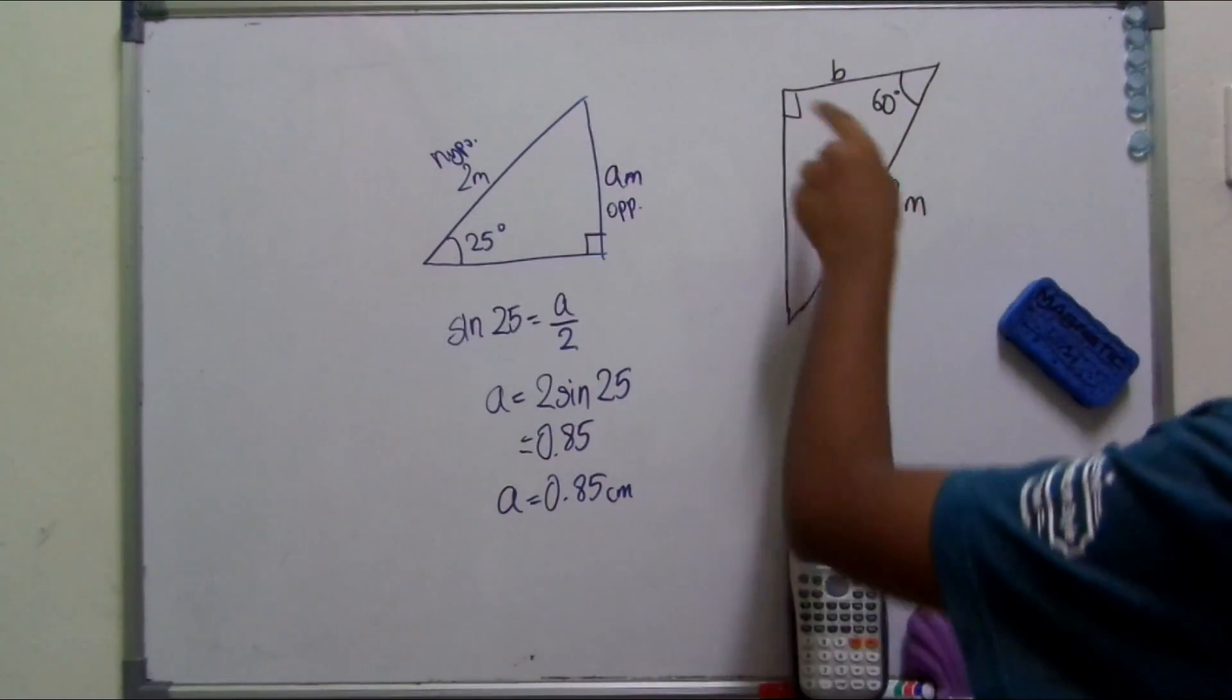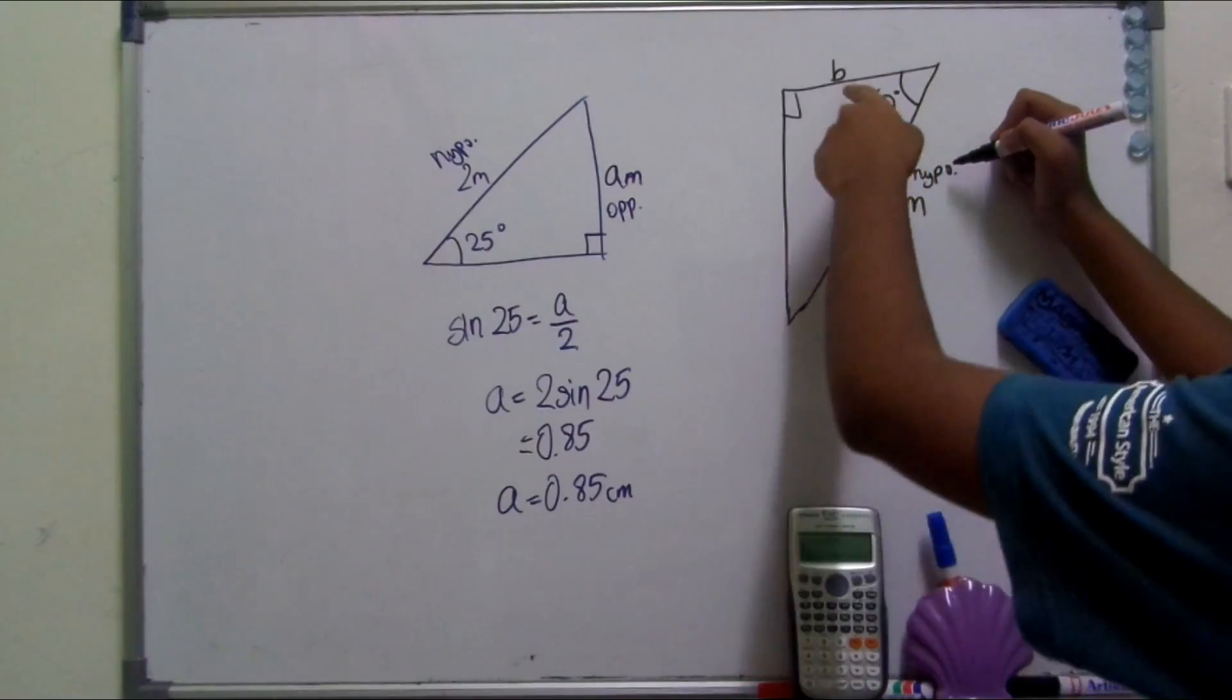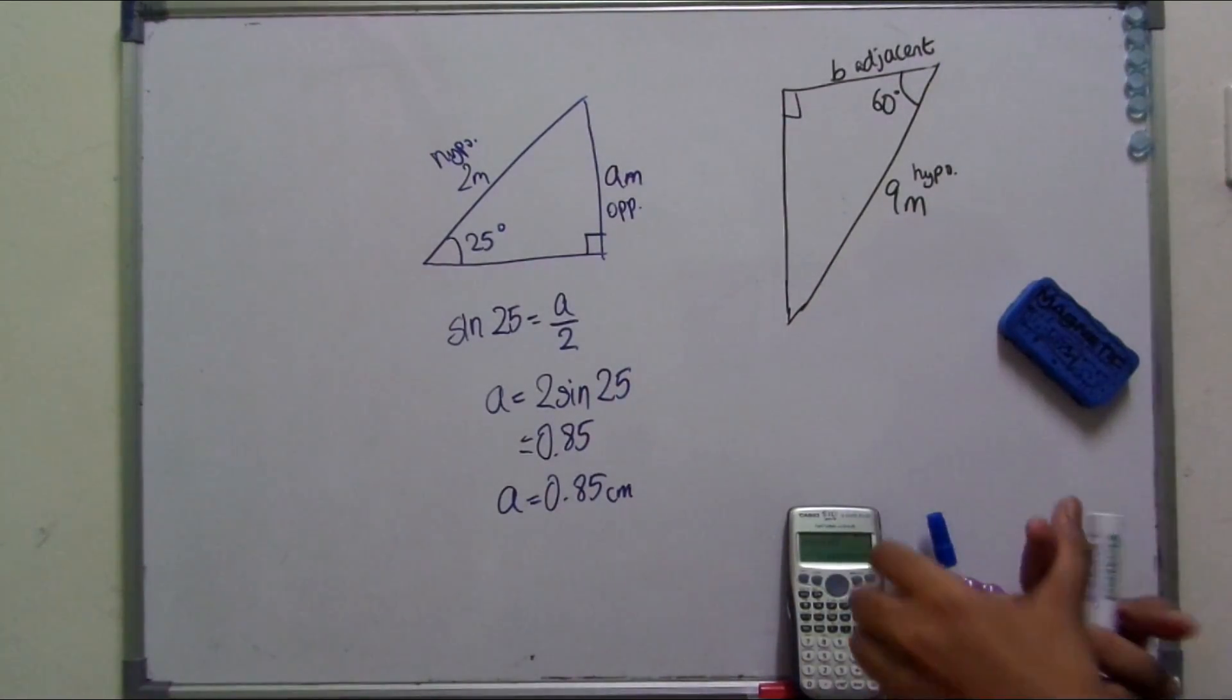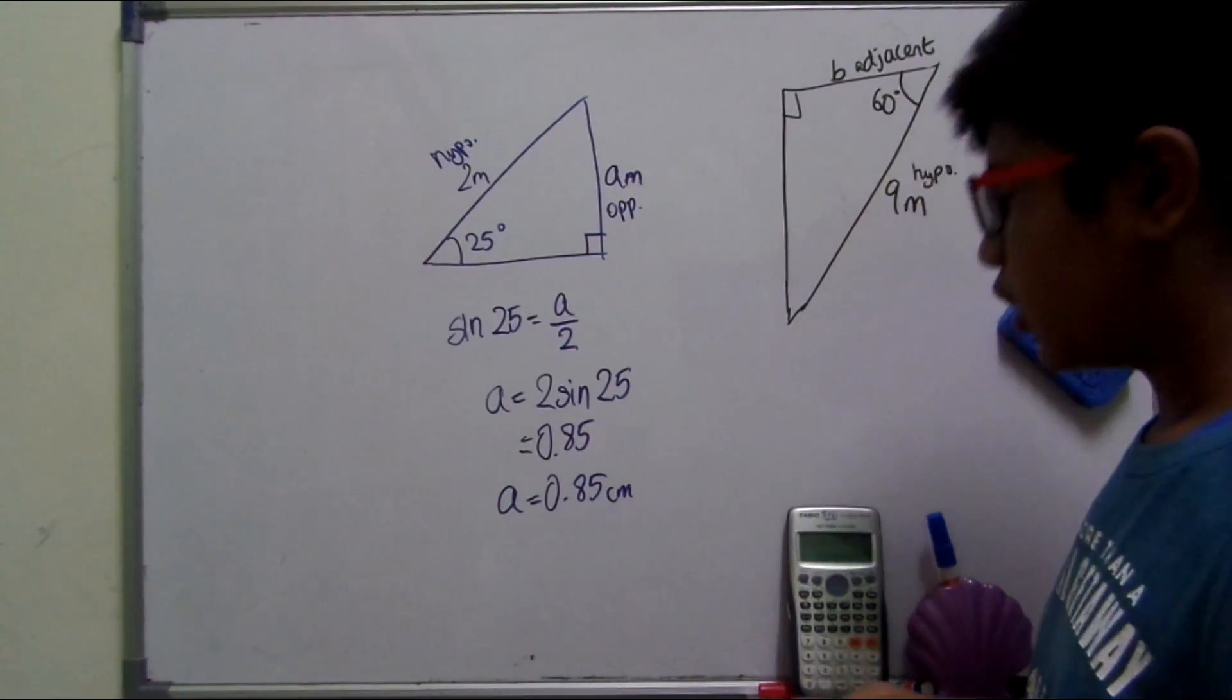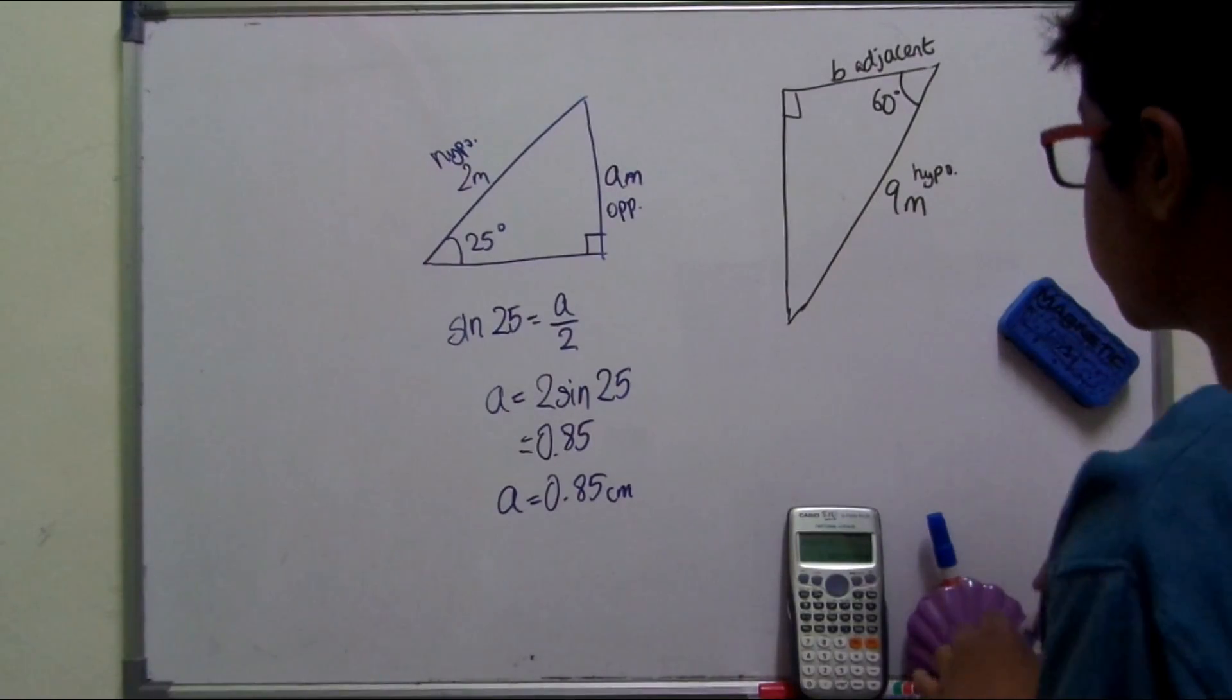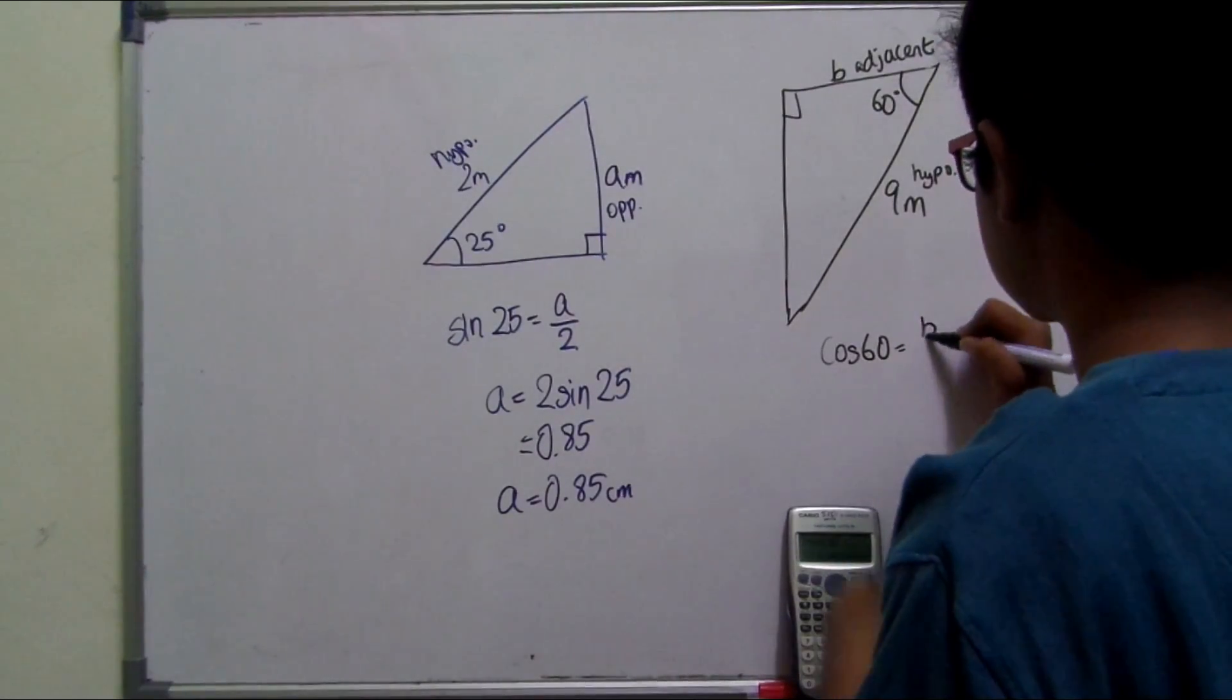So here we need to find out the length of b. We're given 9, the length of the hypotenuse, and b is to 60 degrees, that's the adjacent. And we need to use sine, cosine, or tangent. So which one uses the hypotenuse and the adjacent? Cosine uses the hypotenuse and the adjacent, because cosine is equal to adjacent over hypotenuse. So we're going to use cos. So cos 60 equals b over 9.